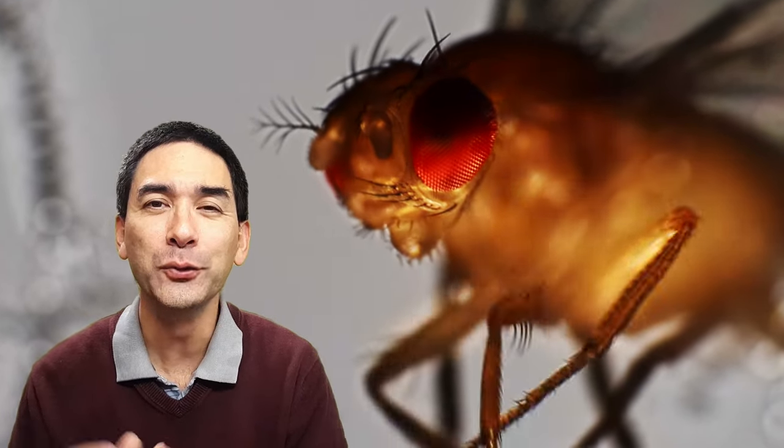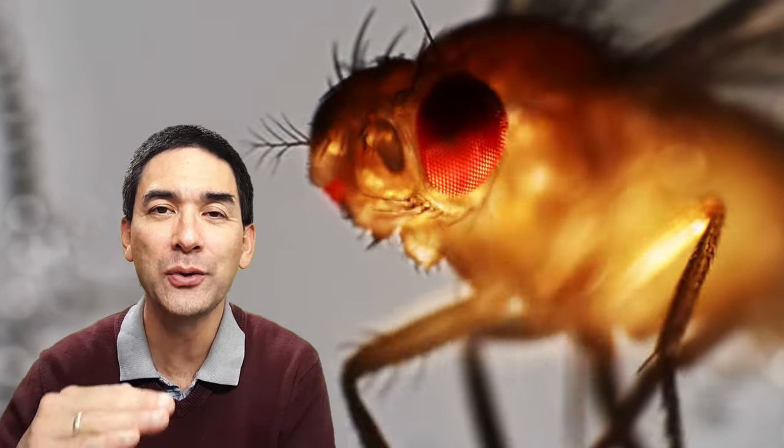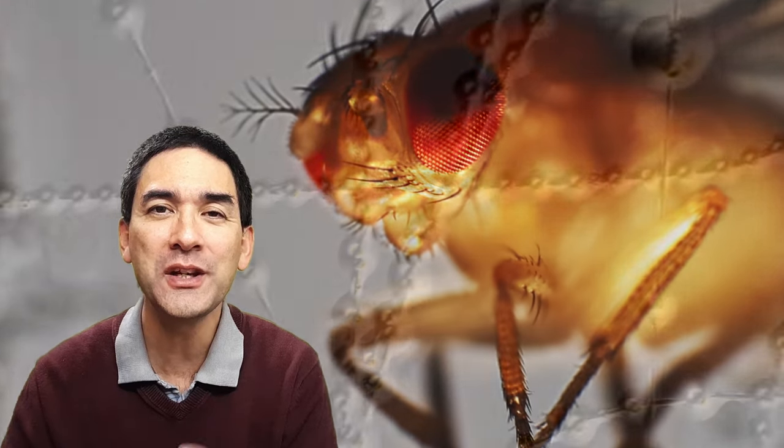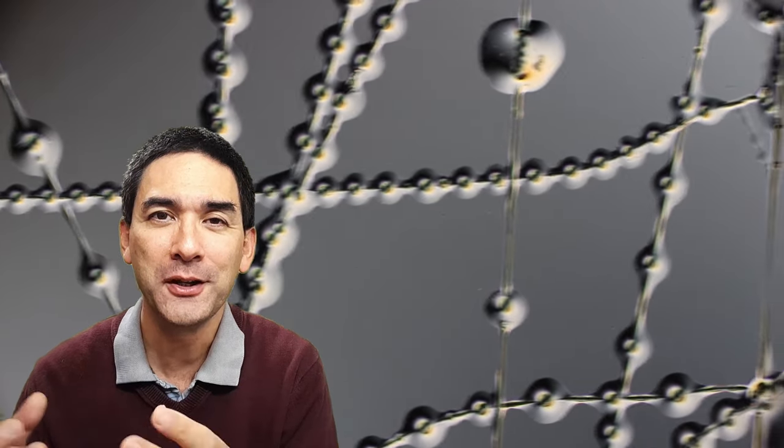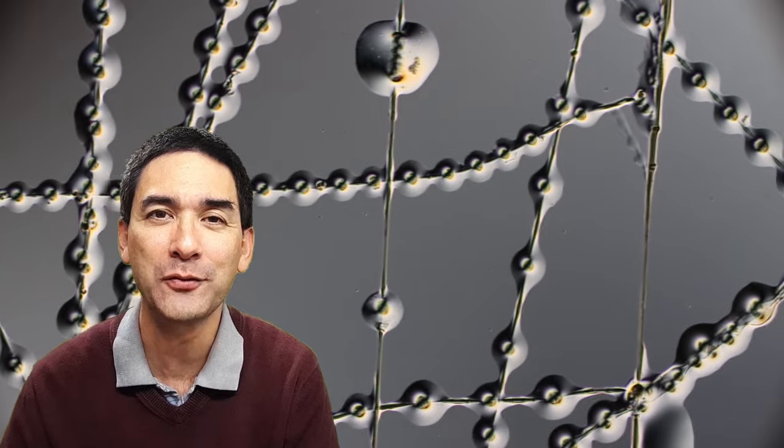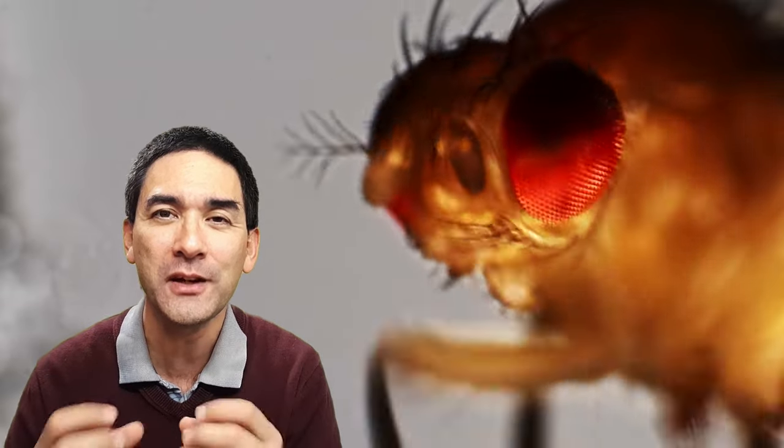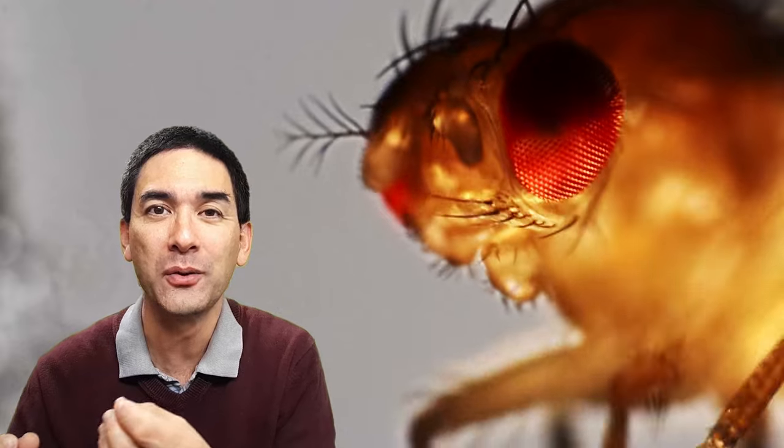This here is a tiny fruit fly which I stuck to a microscope slide using the web of a spider. Here this is a spider's web under the microscope. It is very sticky, very very sticky and I used the spider's web glue to connect the fruit fly with my microscope slide.